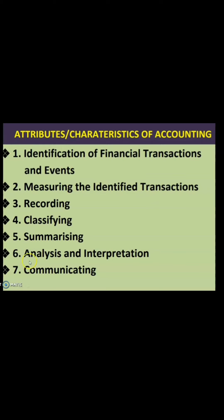There are seven points of characteristics. The first one is identification of financial transactions and events; then measuring the identified transaction; recording; classifying; summarizing; analysis and interpretation; and then communicating. These seven steps have to be followed when you are going through the process of accounting.